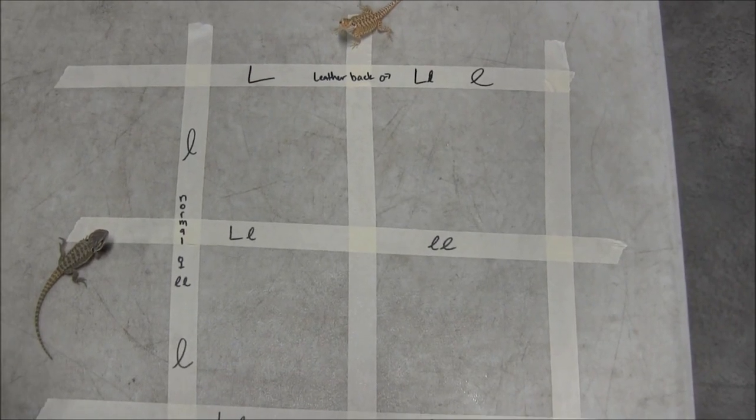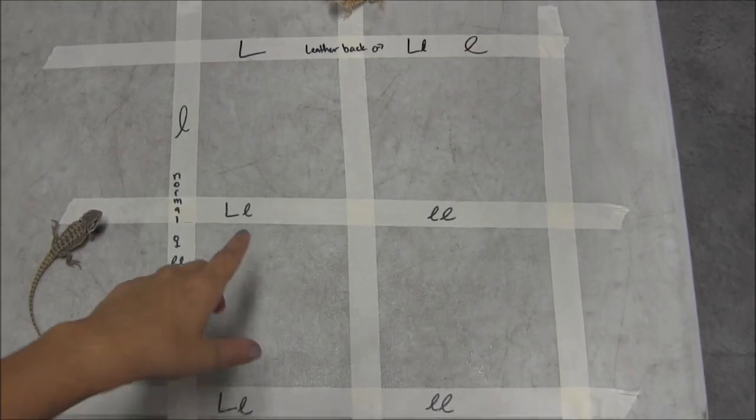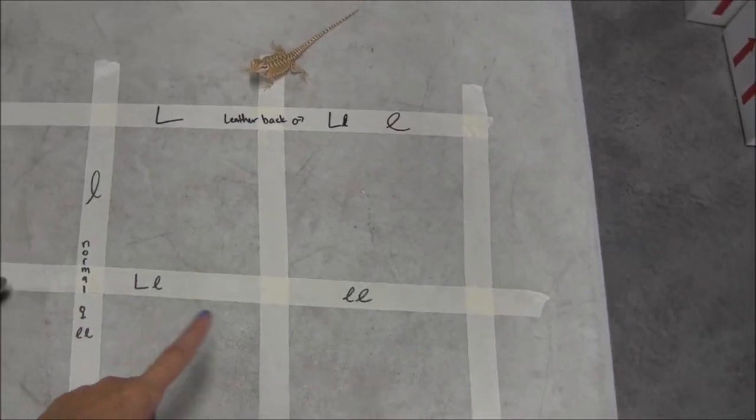So, in order to make a Punnett square, first things first, you're going to make a square. You're going to have two rows and two columns.